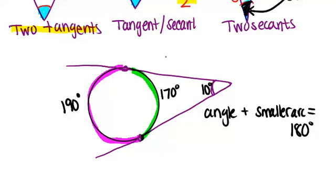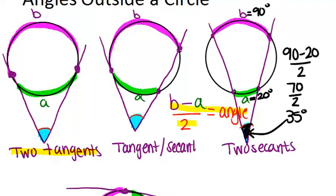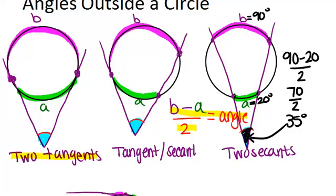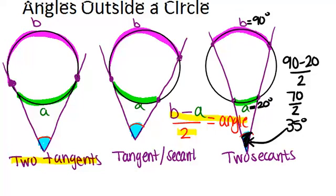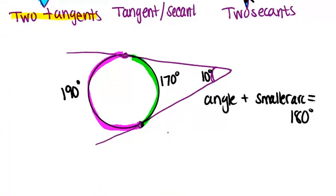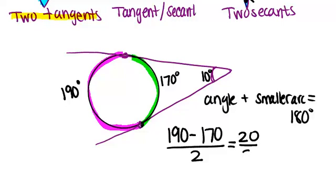So that's an additional thing that will work for the two tangent example. Notice that in this example, what we talked about before is still the case. The bigger arc minus the smaller arc divided by 2 equals the angle. So if we just test that, 190, the bigger arc, minus 170, the smaller arc, divided by 2. Well, 190 minus 170 is 20, and 20 divided by 2 is 10. And 10 was the measure of the angle. So it works here as well.